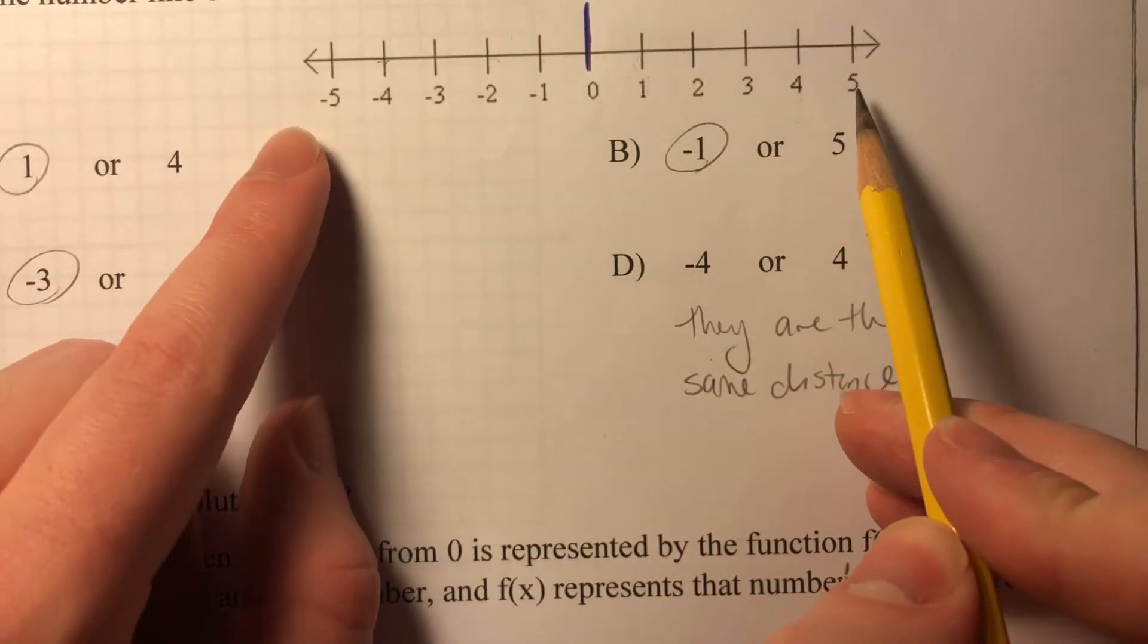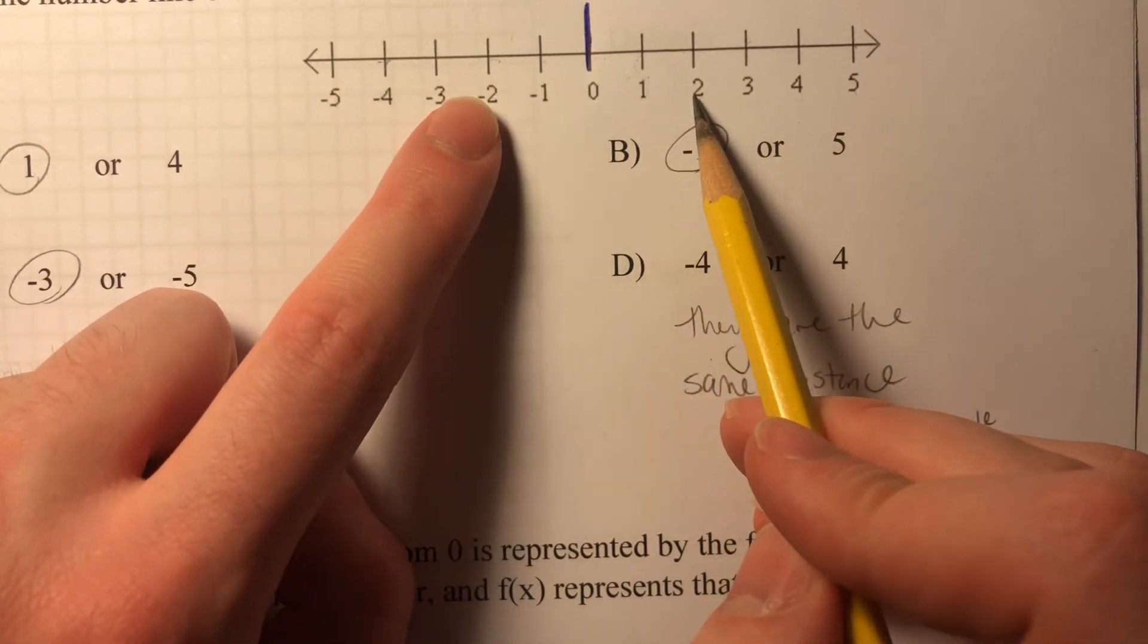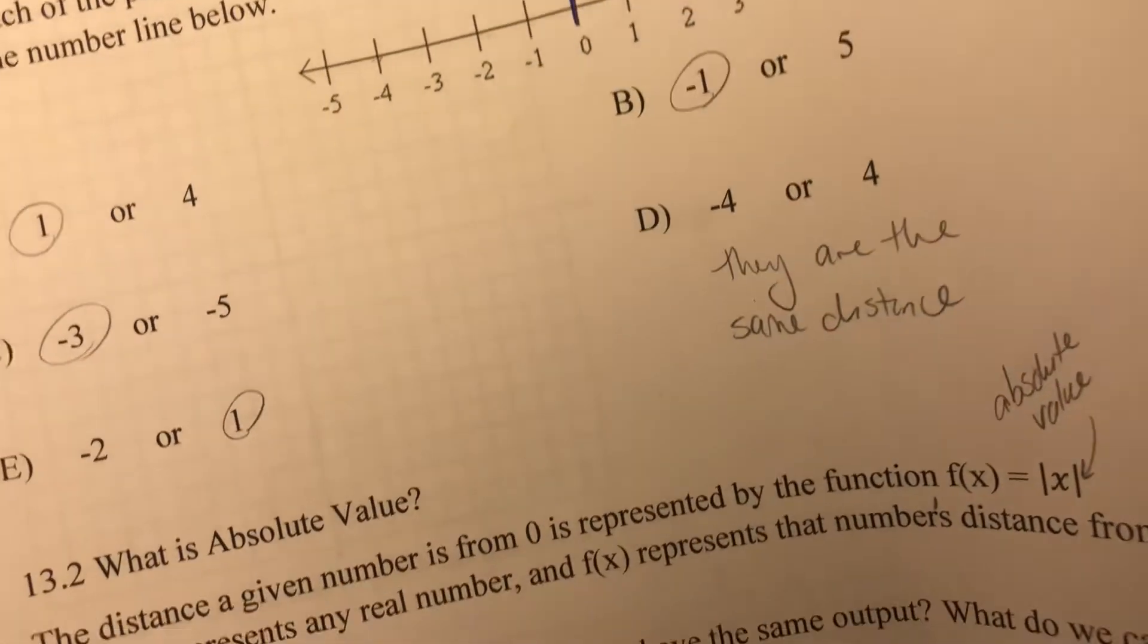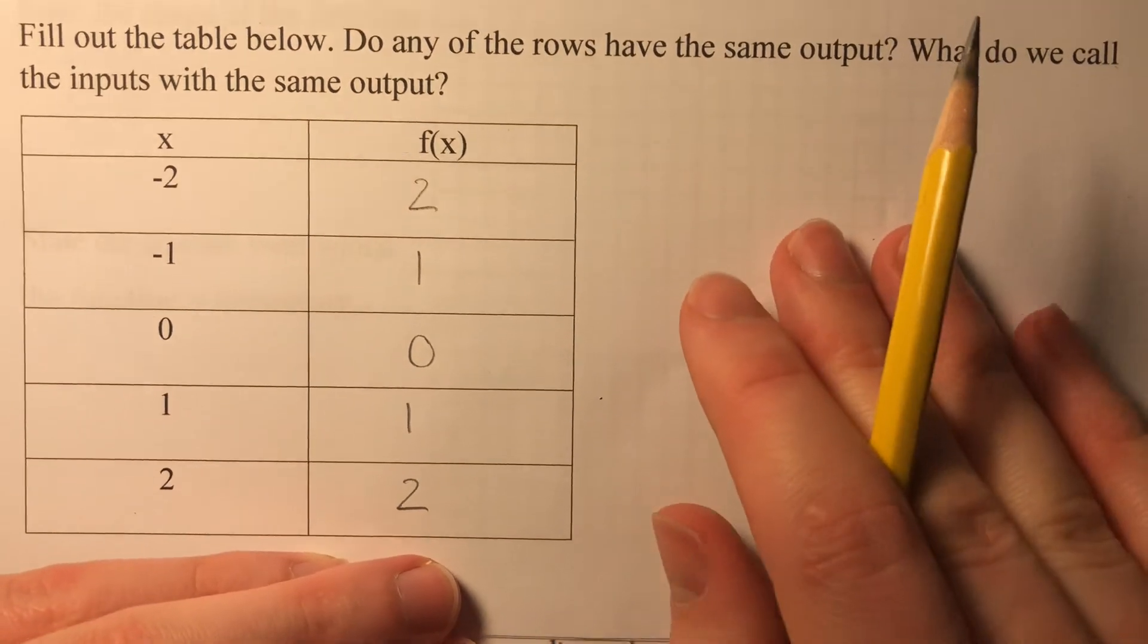Both 1, both 2, both 3, both 4, both 5, you can go on to infinity doing that. All right, so what do we call the inputs with the same output?